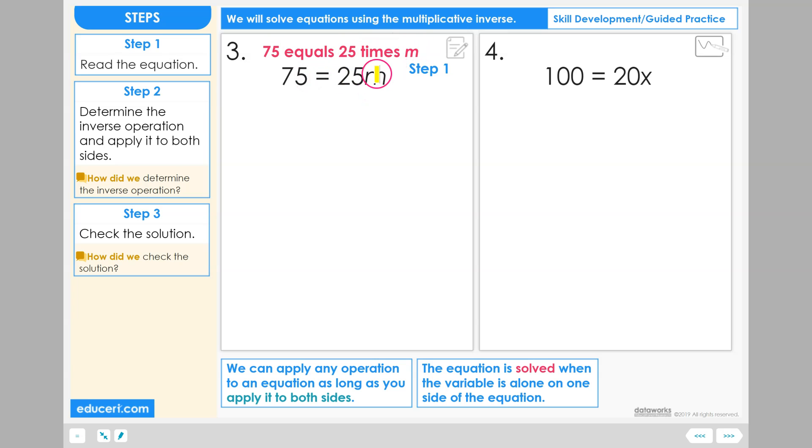We see that the variable is now on the right-hand side. 75 on the left-hand side and 25 times m on the right-hand side.